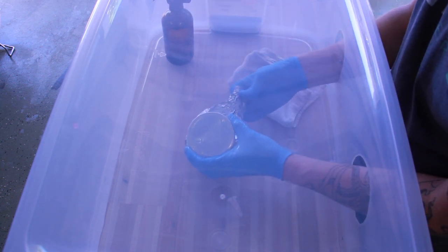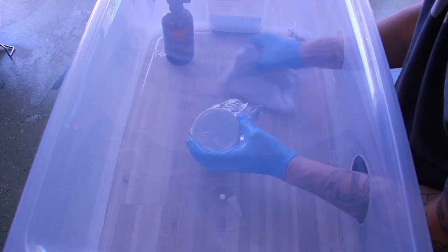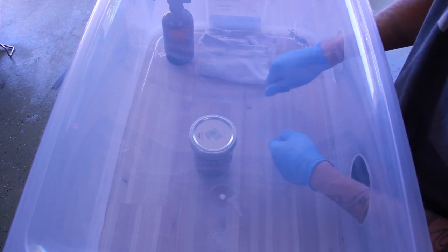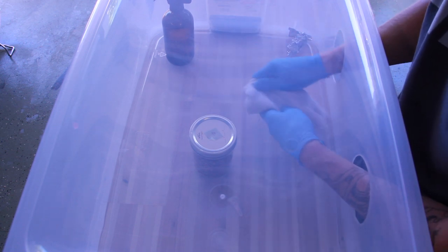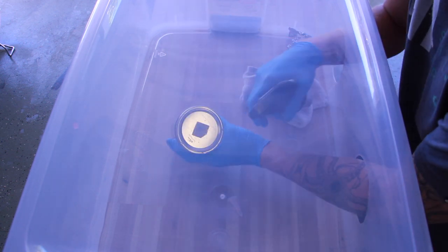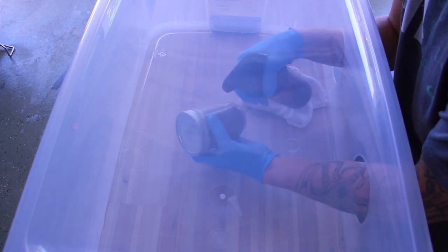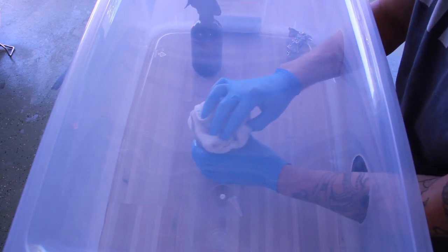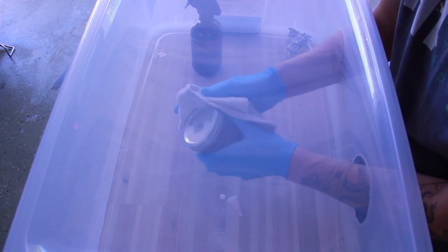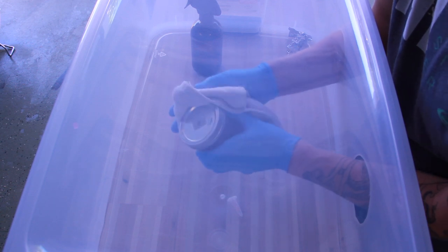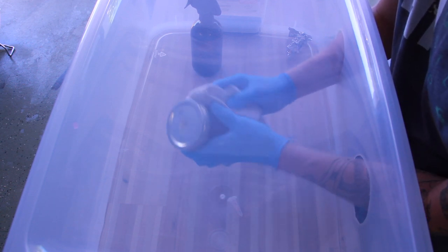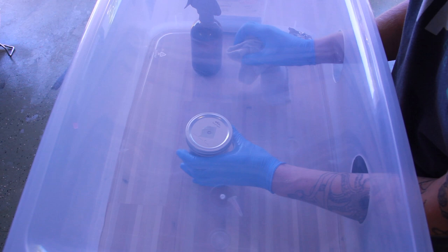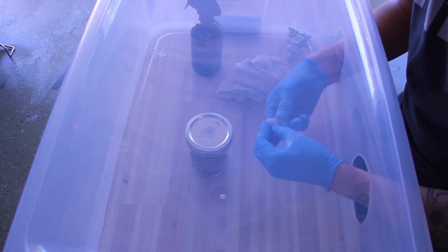I pulled the aluminum foil off the top of my sterilized rye grain. I sprayed the jar down really well. I pulled the tape off of the agar wedge.